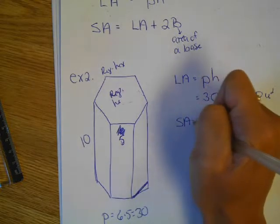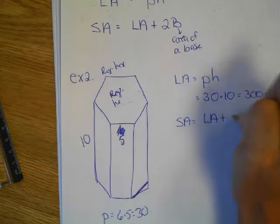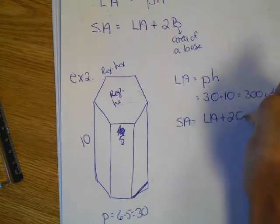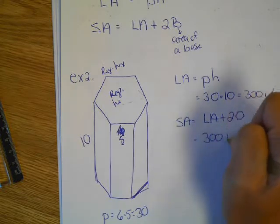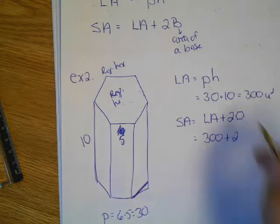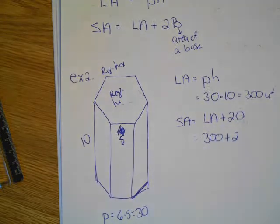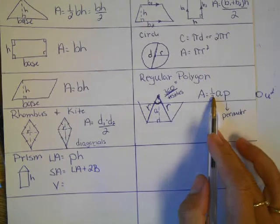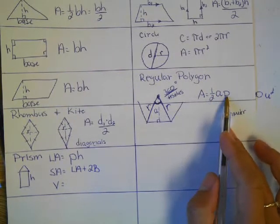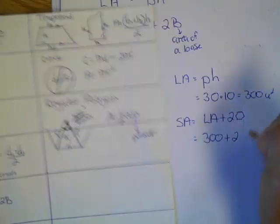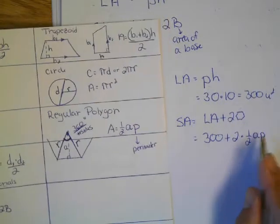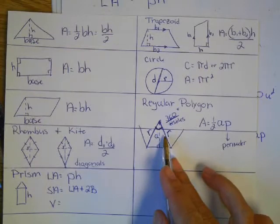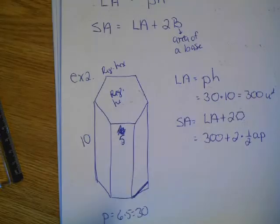So the surface area is LA plus two hexagons. The LA is 300. Plus two. And a hexagon is a regular polygon. And the formula for a regular polygon is one-half apothem times perimeter. So we're back to this thing again. So two times one-half AP. Well, perimeter we've got. The apothem we're going to have to find. So we'll do a little work off to the side so we can substitute that in there.